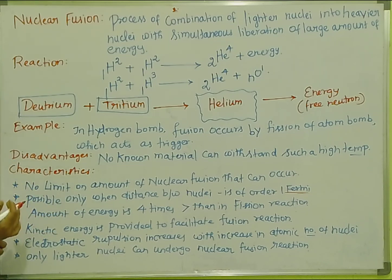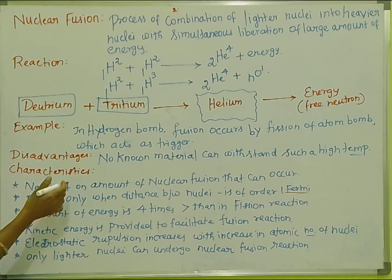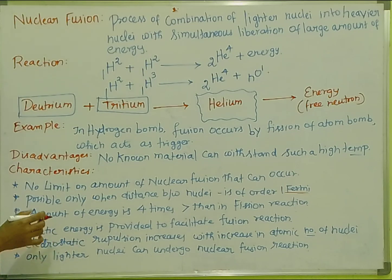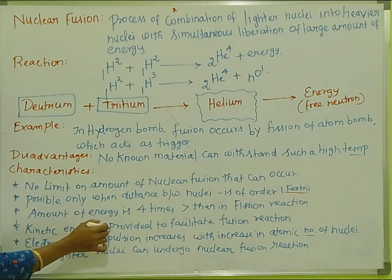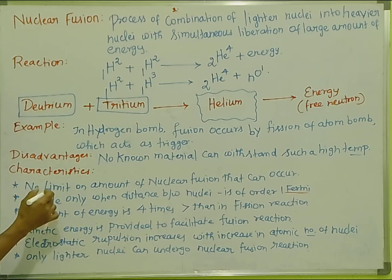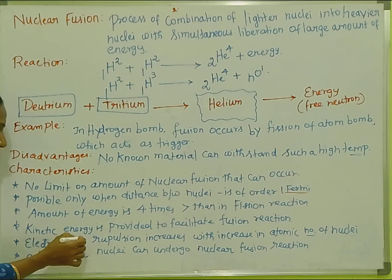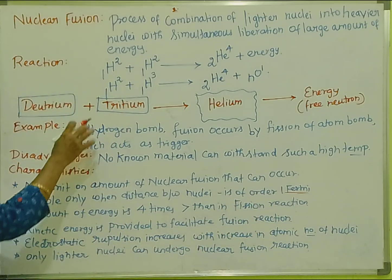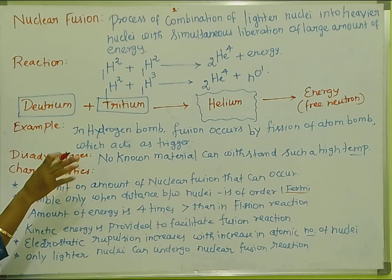How is fusion energy released? The fusion reaction releases energy. The energy released in fusion is 4 times greater than the fission reaction. If kinetic energy is provided to facilitate the reaction, it will increase the kinetic energy further. The electrostatic repulsion increases with increasing atomic number of the nuclei.